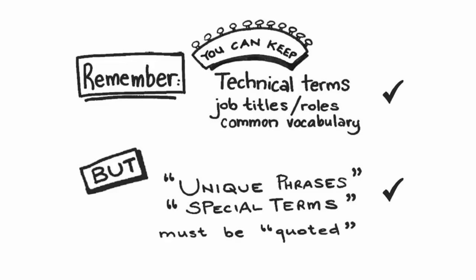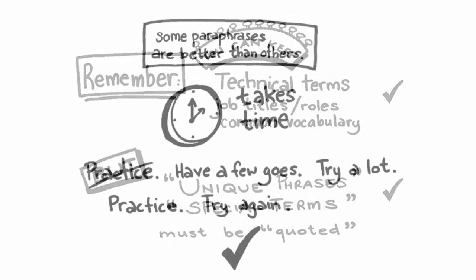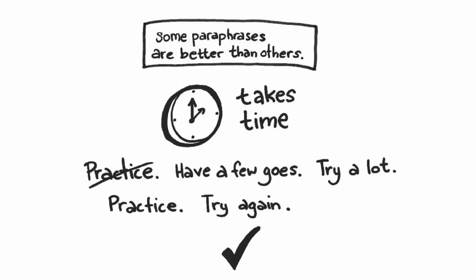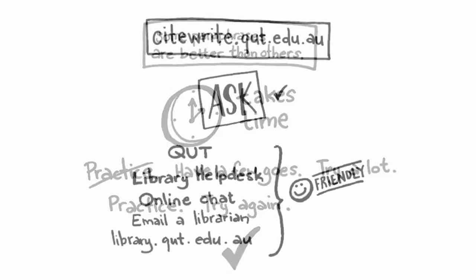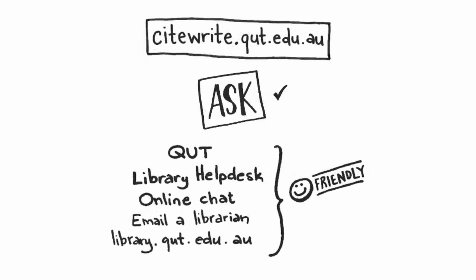Remember, it's okay to use technical terms, job titles or roles, and common vocabulary without quotation marks in your paraphrase. However, unique phrases and special terms must be quoted. Great paraphrasing takes time and you'll need to have a few goes to get it right — make sure you leave enough time when drafting your assignment to incorporate sophisticated paraphrasing. Lastly, if you need help, just ask. Use Cite Right to check how to cite and reference using different methods, or come and see us at the library, either in person at the help desk or online.